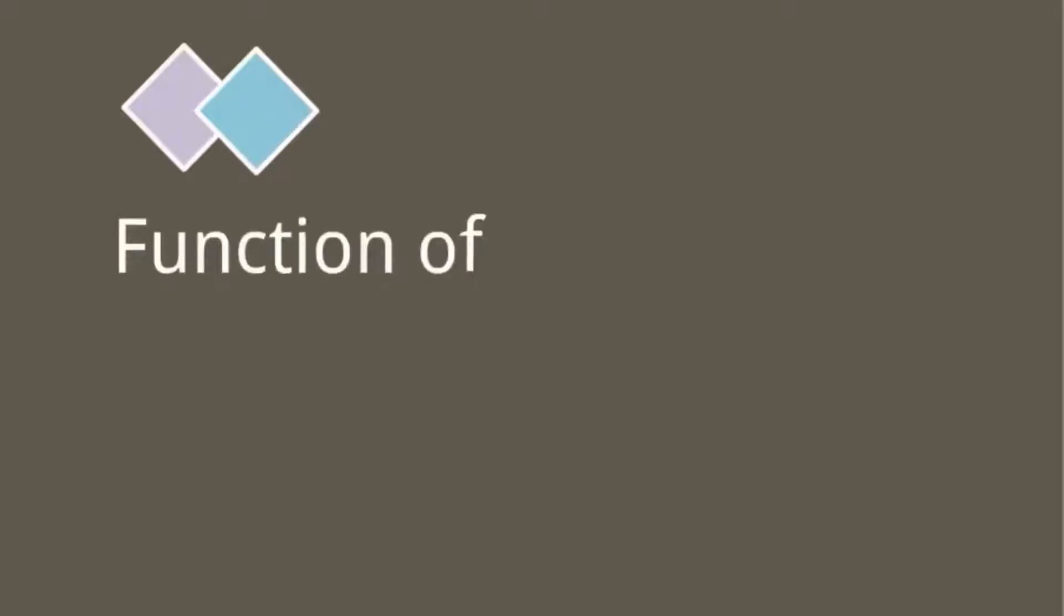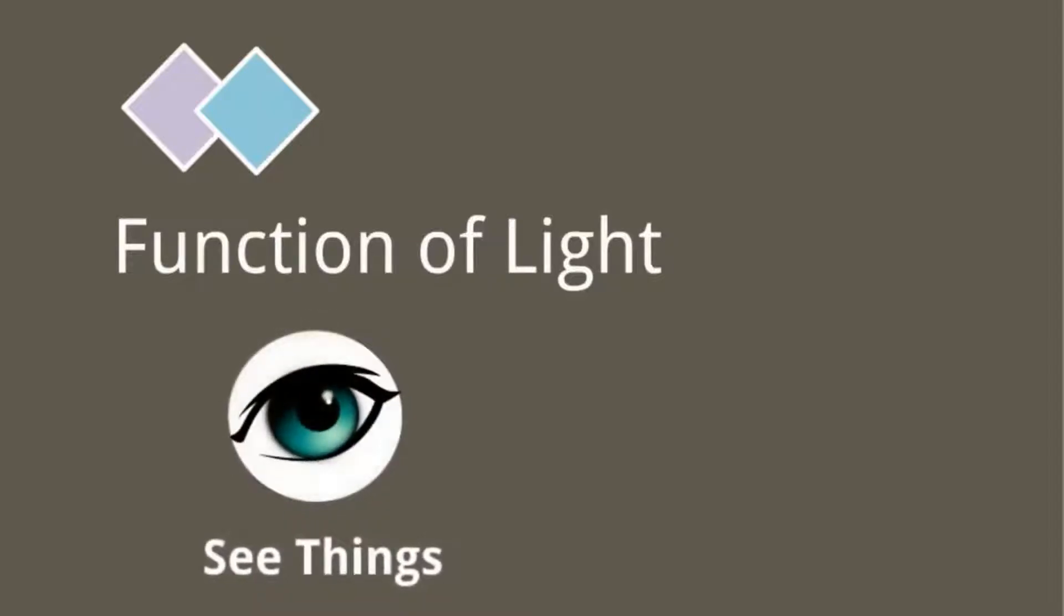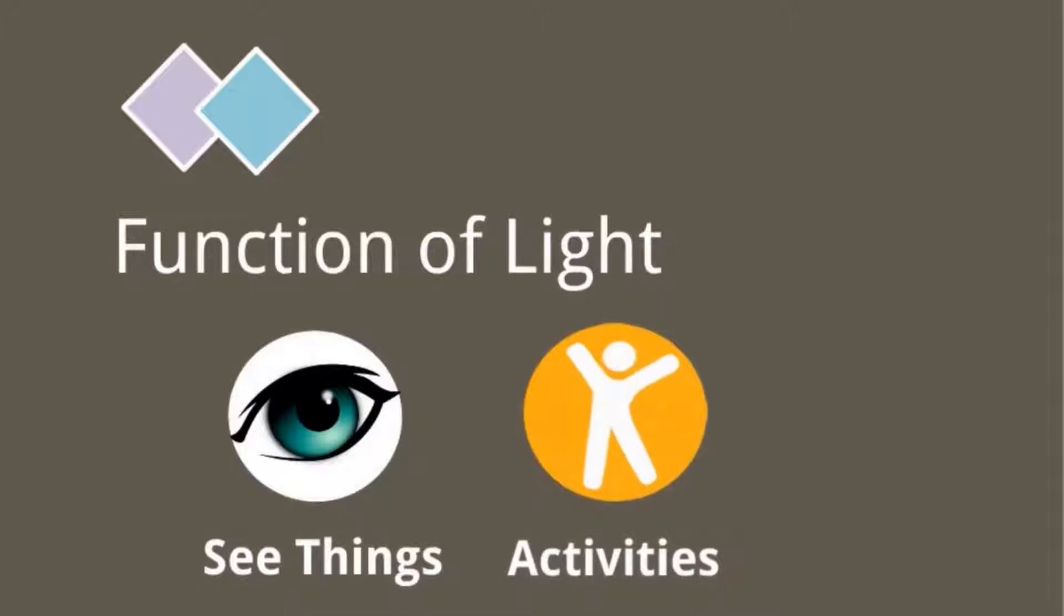Functions of light: we can see everything around us only because of light. We do all our activities in day-to-day life - we play, we swim, we read, we jump - we do all activities because of light and survive. We know plants make their food in presence of light and we take that food and survive.